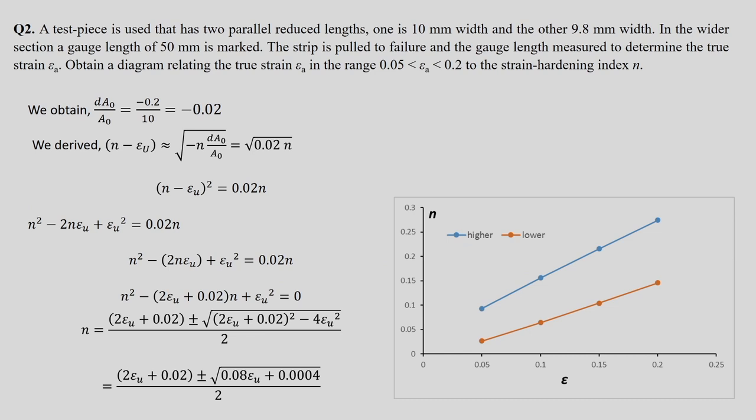The next problem has a similar geometry. The test piece has two parallel reduced lengths: one with 10 mm width and the other with 9.8 mm width. In the wider section, a gauge length of 50 mm is marked. The strip is pulled to failure and the gauge length is measured to determine the true strain epsilon_a.